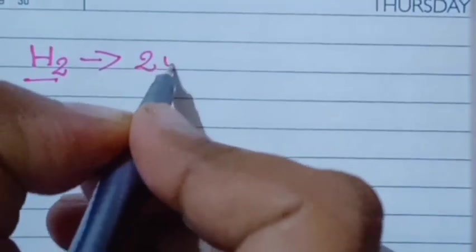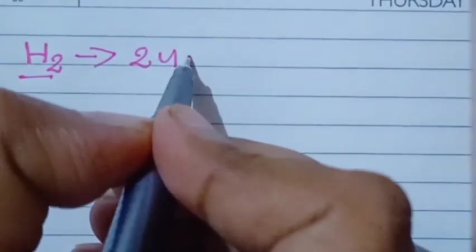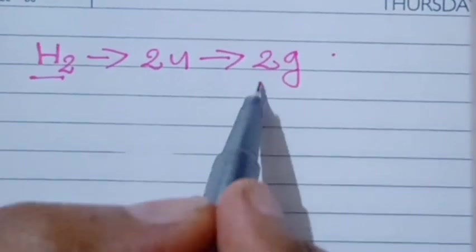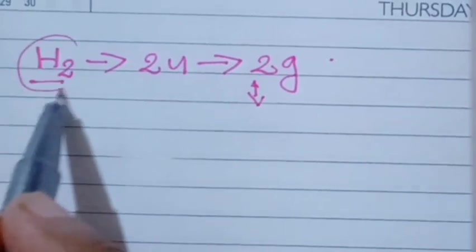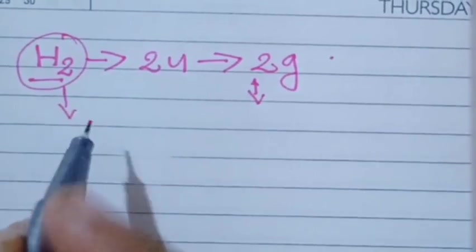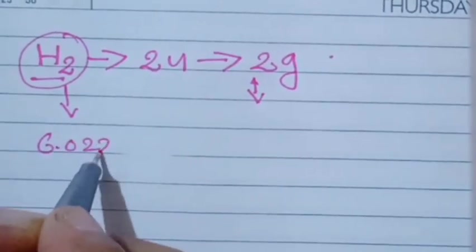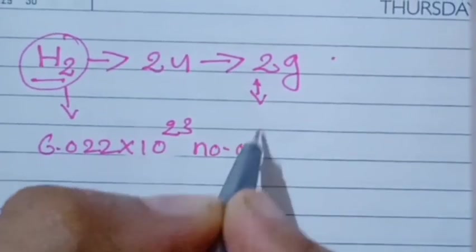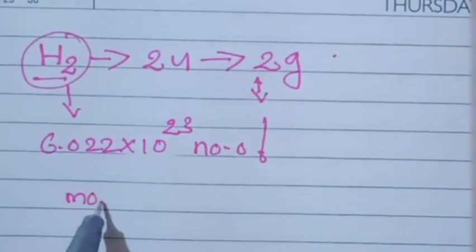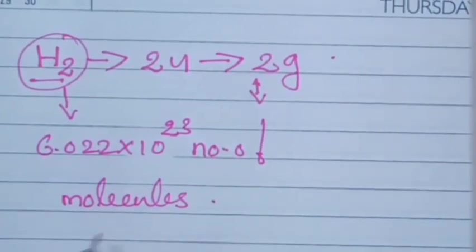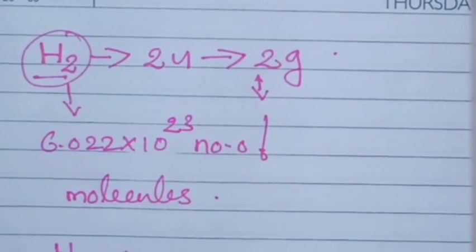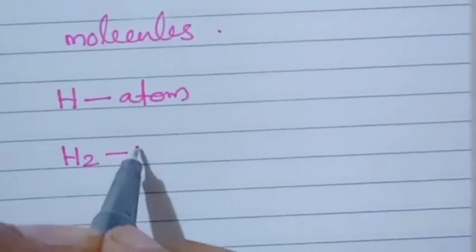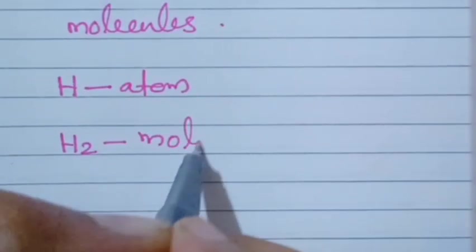Now consider hydrogen molecule, H₂. Its molecular mass is 2 u, which expressed in grams is 2 grams. So 2 grams of hydrogen molecules contain 6.022 × 10²³ molecules. Since H is an atom and H₂ is a molecule, we refer to molecules rather than atoms here.